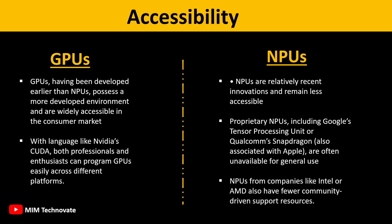Proprietary NPUs, including Google's Tensor Processing Unit and Qualcomm's Snapdragon — also associated with Apple — are often unavailable for general use. NPUs from companies like Intel or AMD also have fewer community-driven support resources.